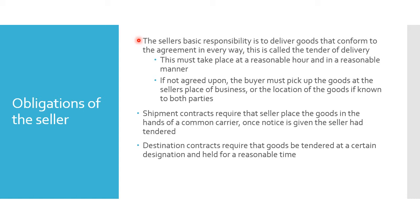The seller's basic responsibility is to deliver goods that conform to the agreement in every way. For example, if I contract to deliver 500 fryer chickens from my poultry farm to your restaurant before noon on Friday, then I need to deliver that number of chickens in the time frame required, at the place required. That's the seller's responsibility — to do exactly what they agreed to do, and it's straightforward when the agreement specifically spells out what's required.